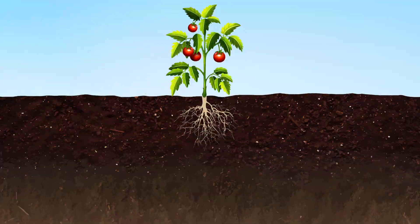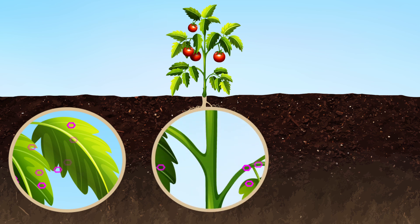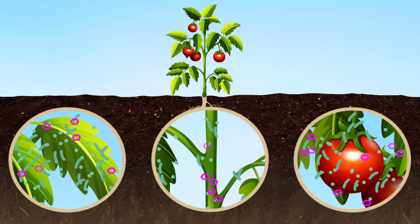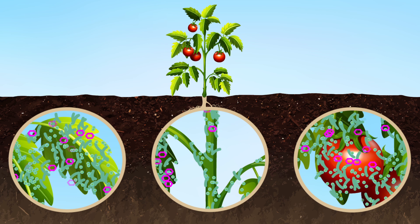But what about the above-ground part of the plant? It just so happens that plants release sugars and carbs from their leaves too, and from their stems and fruit — in fact, from all parts of the living plant. And the beneficial microorganisms can be found there too, feeding on the compounds being released by the plant and providing protection to the infection sites in return.